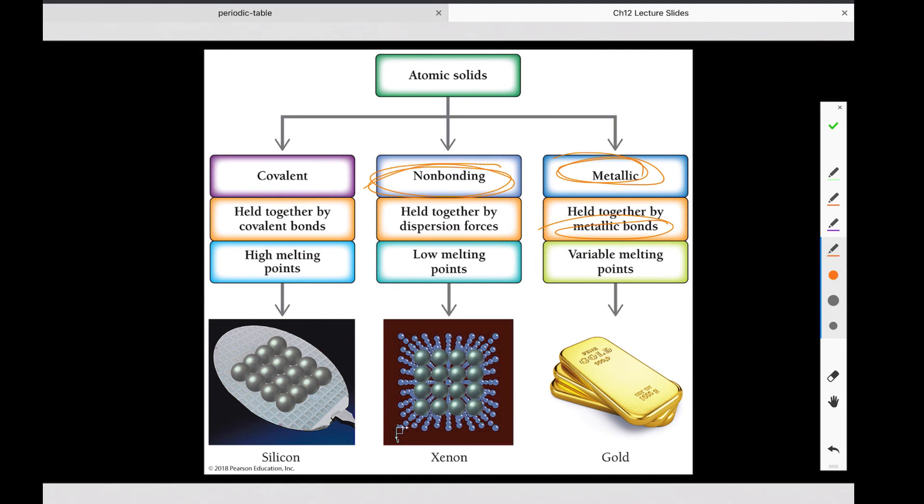Then we have our non-bonding ones. So these are ones that are pretty much everything else. So if it's not a metal, it's most likely a non-bonding one held together by LDFs with relatively low melting points. Then we have a rare few that have covalent bonds that hold them together. Silicon is one example, carbon, two forms being graphite and diamond, are also some exceptions in that those are covalently bound.